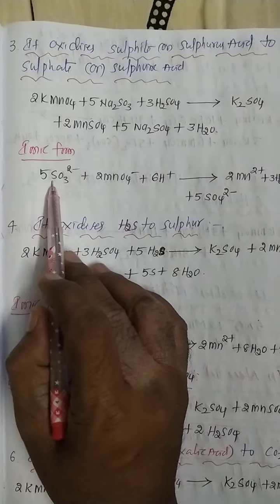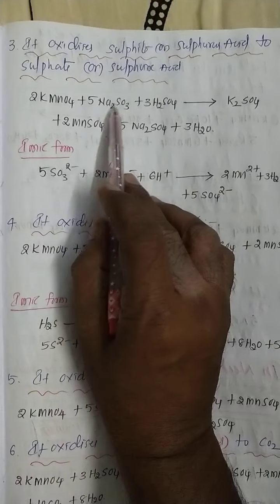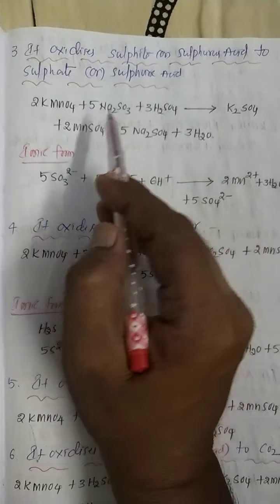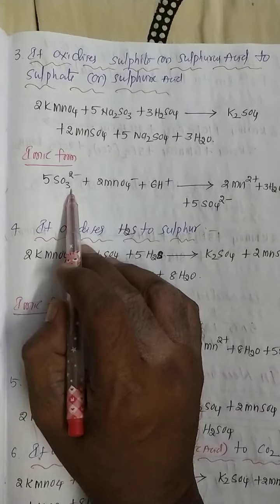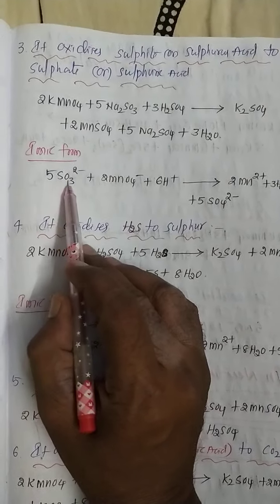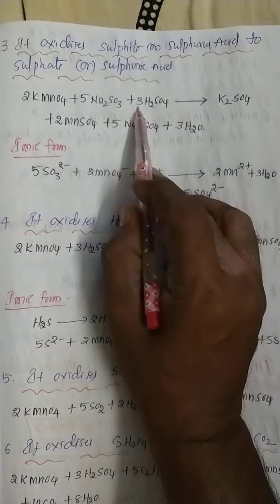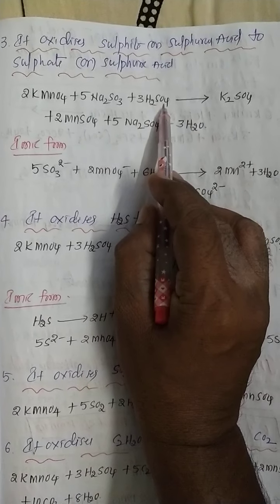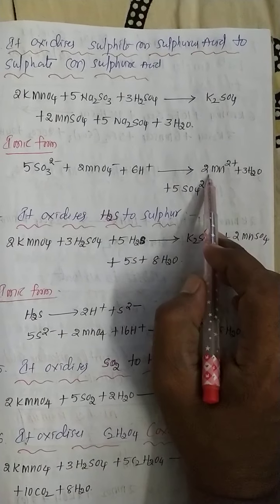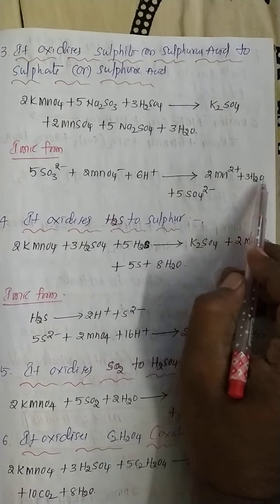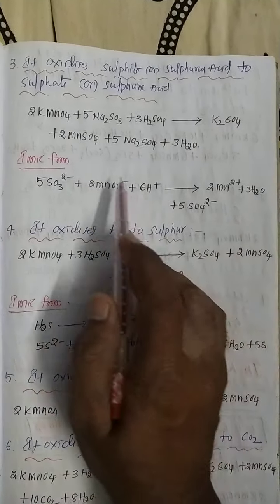In the ionic form, sodium and potassium oxidation states do not change from the left side to the right side of the equation, so they are not mentioned. The ionic equation is: 5SO₃²⁻ plus 2MnO₄⁻ plus 6H⁺ gives 2Mn²⁺ plus 3H₂O plus 5SO₄²⁻. This ionic form is very important for students — only species that change oxidation state are written in the equation.